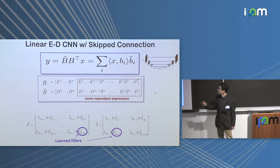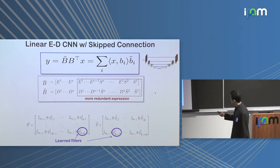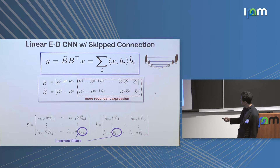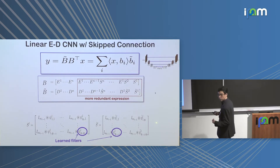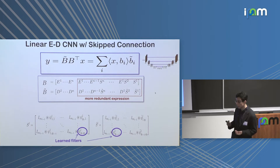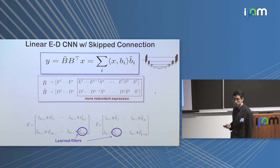For a linear neural network with skip connections — which have been widely used in neural network architectures — it turns out this expression doesn't change. The only difference is there are augmented blocks in the matrix, meaning the number of basis frames increases — the representation becomes more redundant. In signal processing, we know that a redundant frame has many advantages, such as noise robustness, and we can see similar behavior arising from skip connections.